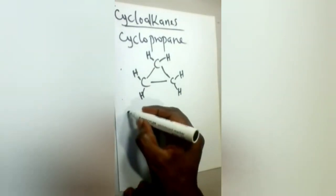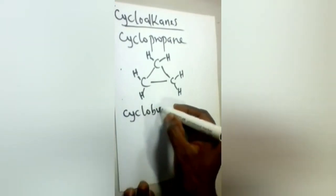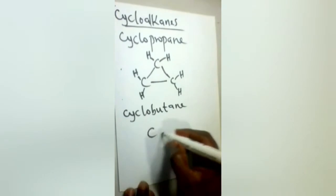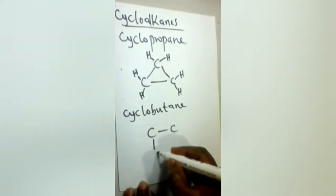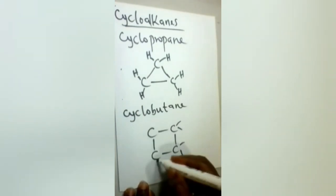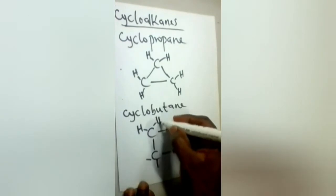Let's take also cyclobutane. In this case, four carbon atoms arranged in a cyclic manner. Each of these carbon atoms has two more hydrogen atoms.